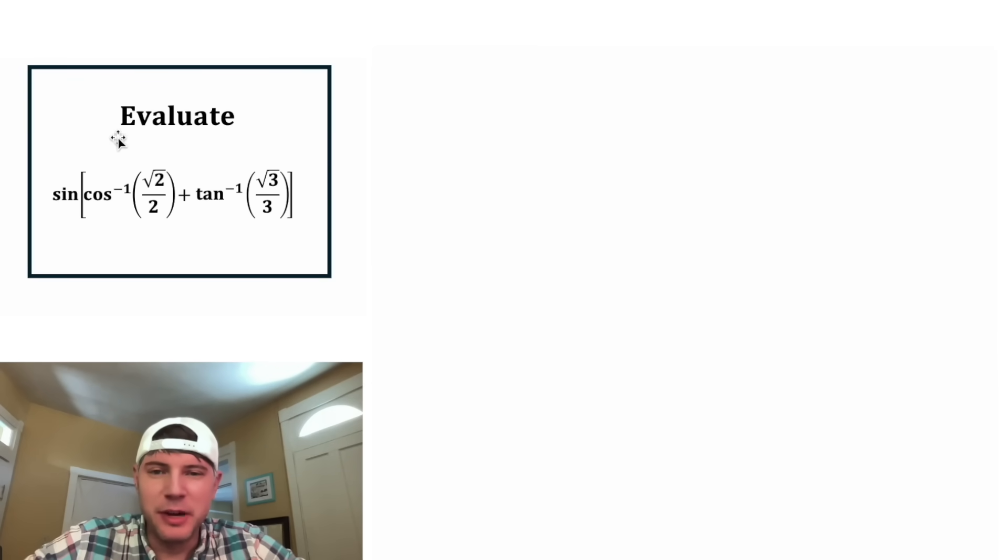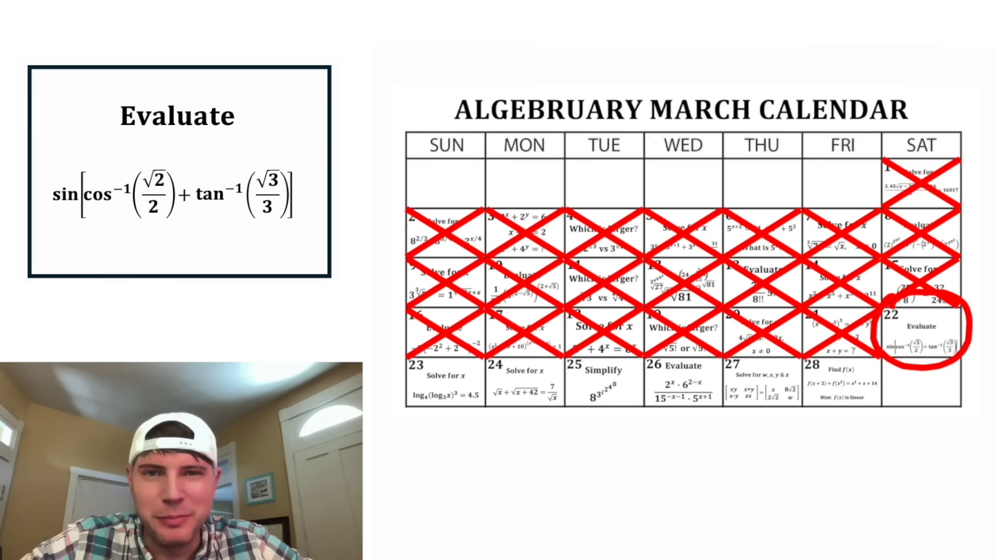Hey guys, this looks like a fun one. It says evaluate sine of the quantity cosine inverse of square root of two over two plus tangent inverse square root of three over three. This is day 22 of our Algebra March calendar.